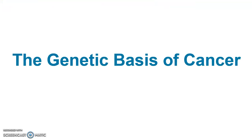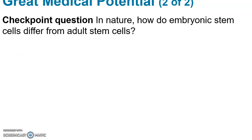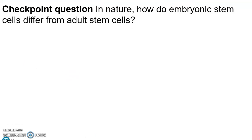Here's a checkpoint question: How do embryonic stem cells differ from adult stem cells? Embryonic stem cells differ from adult stem cells in that they are less far down the path of differentiation, and therefore can give rise to more cell types compared with adult stem cells, which are farther down that path and can give rise to fewer cell types.